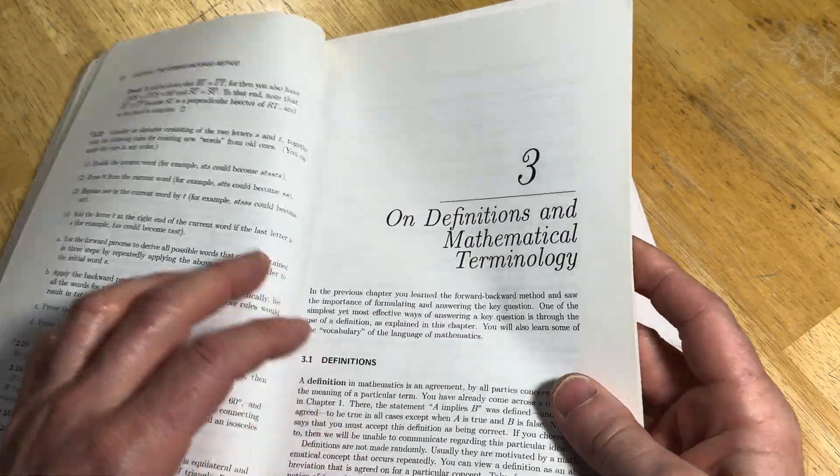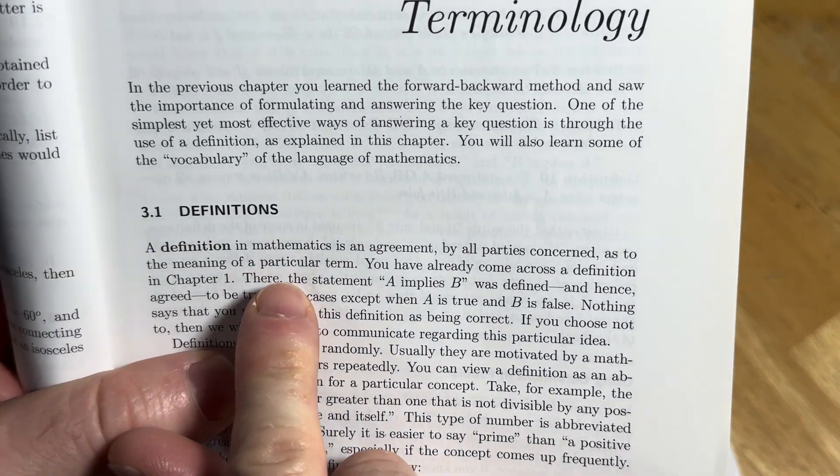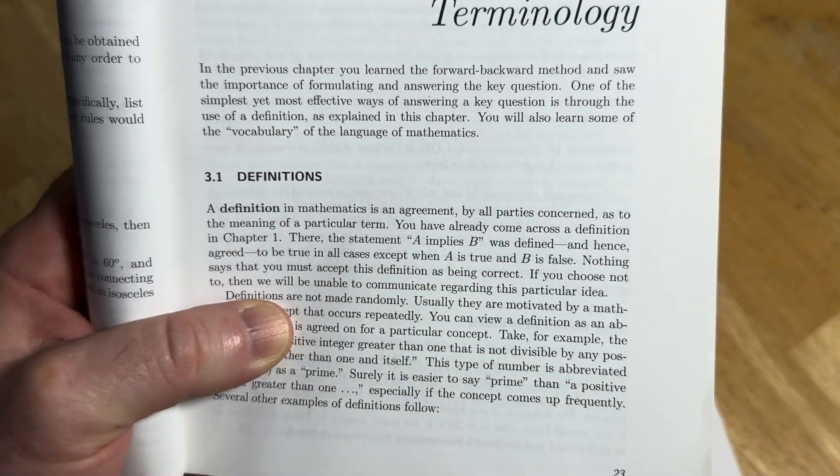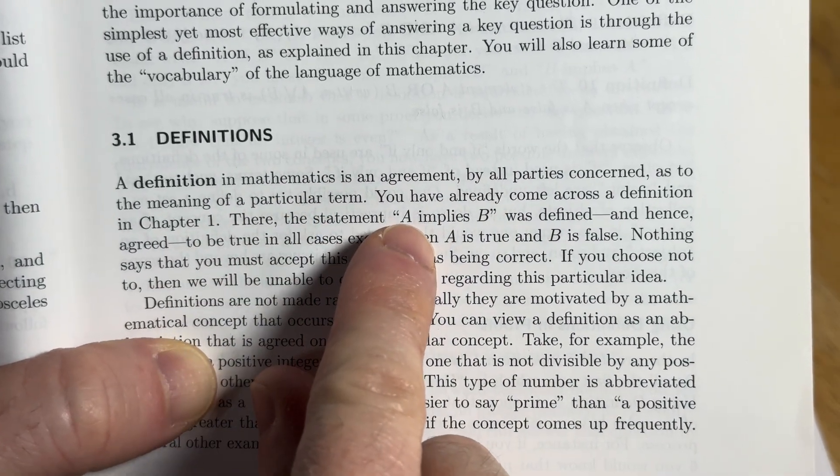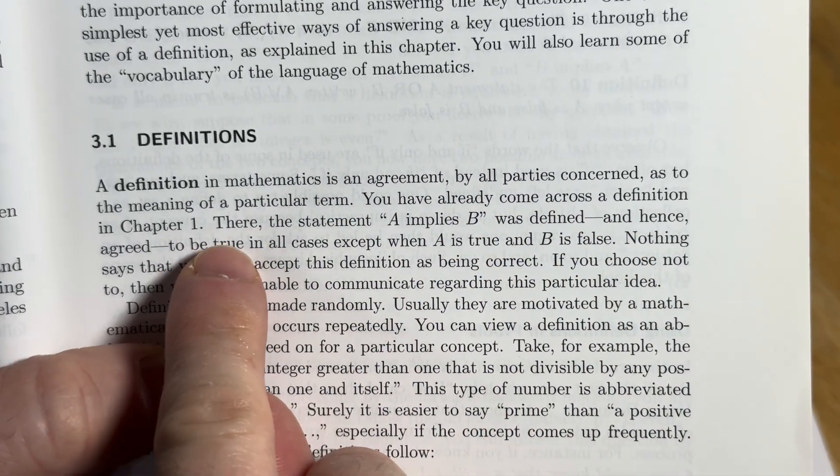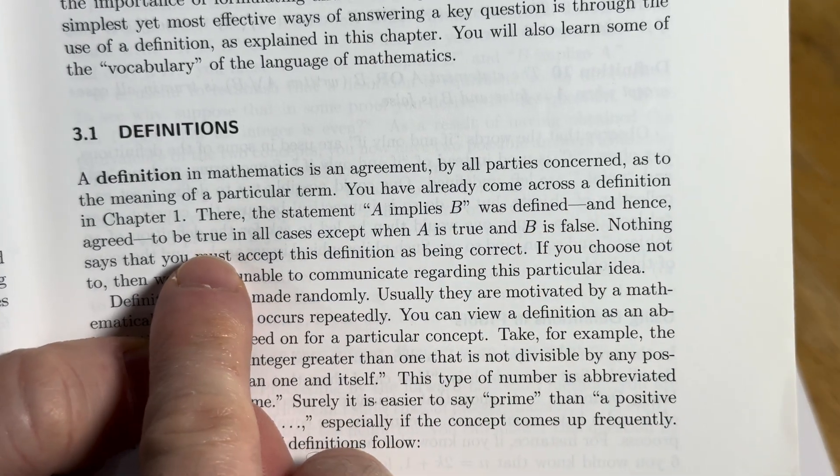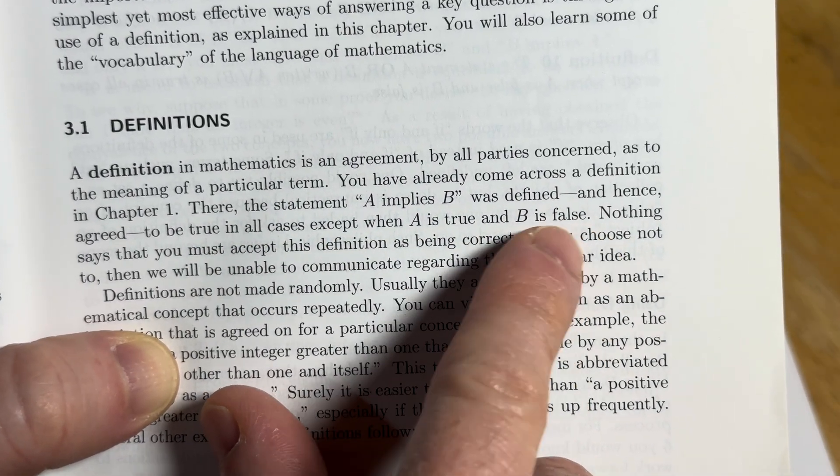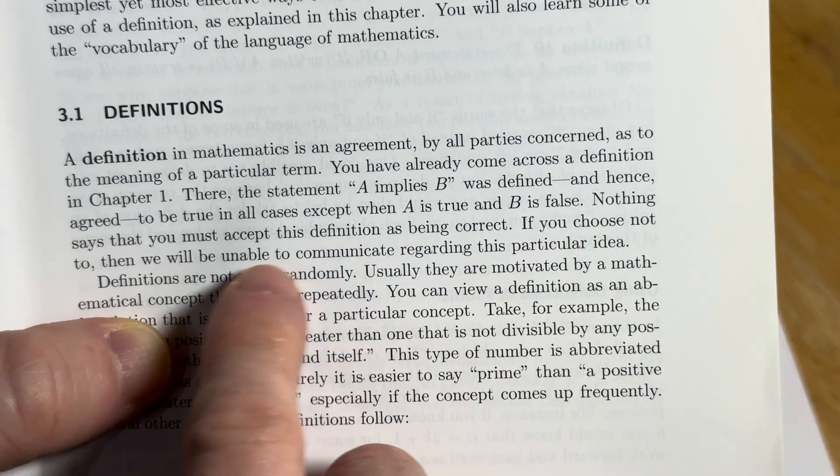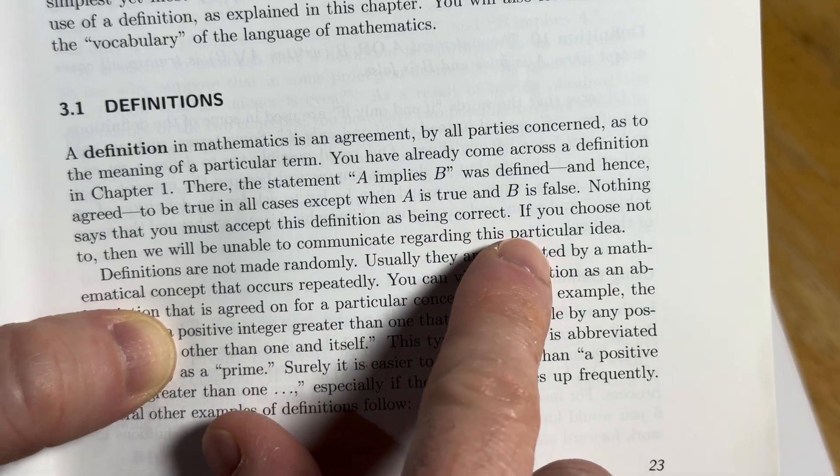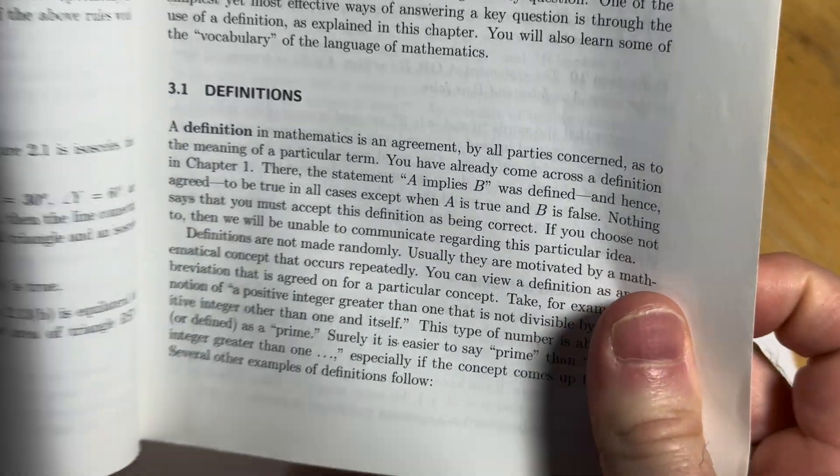And then on definitions and mathematical terminology. Let's take a look at this. A definition in mathematics is an agreement, he says, by all parties concerned, as to the meaning of a particular term. You have already come across a definition in chapter one. There, the statement A implies B was defined, and hence agreed to be true in all cases, except when A is true and B is false. Nothing says that you must accept this definition as being correct. If you choose not to, then we will be unable to communicate regarding this particular idea. Yeah, and says they're not made randomly, they're motivated.